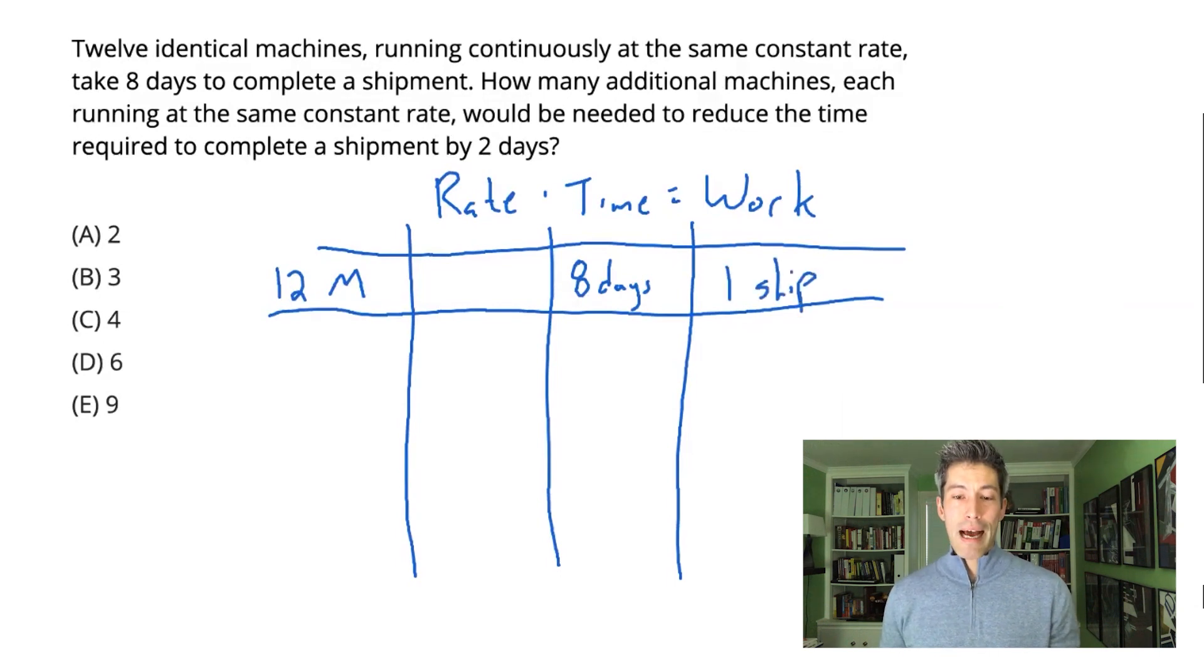From this, I can deduce now that the rate of these 12 machines is one-eighth because one-eighth multiplies by eight to equal one. In real world terms, what this means is these 12 machines complete one-eighth of the shipment every day.